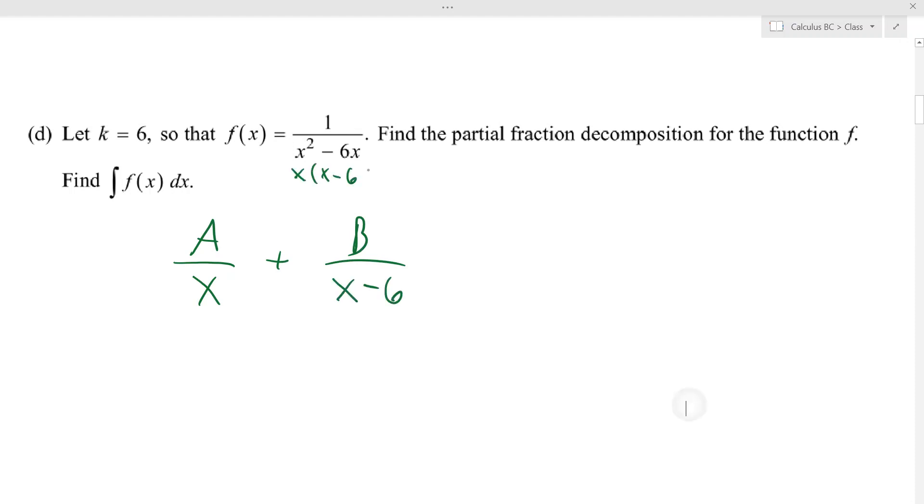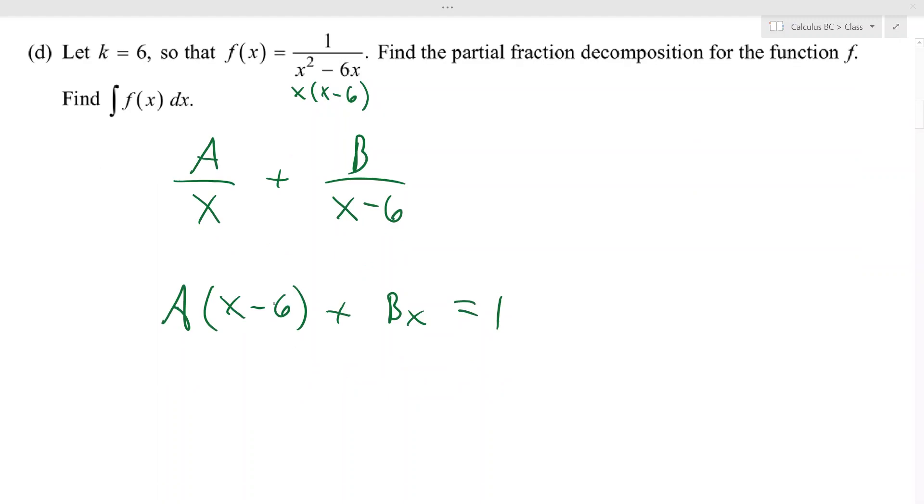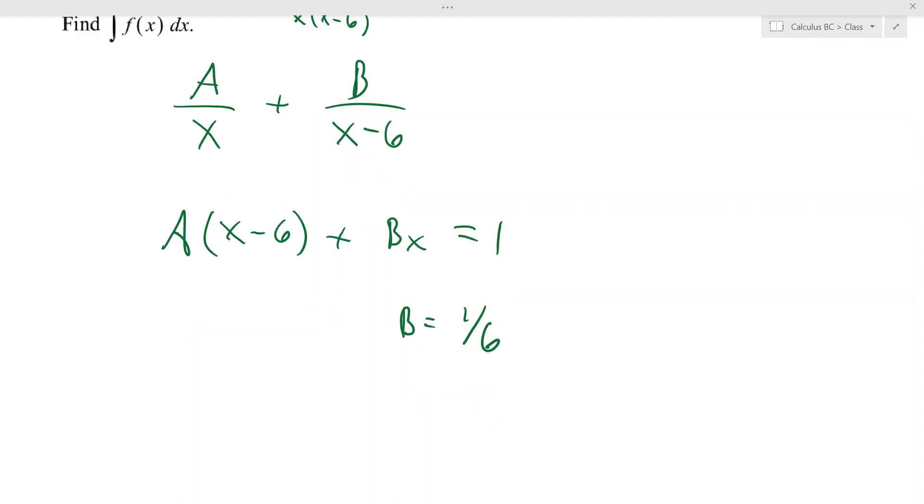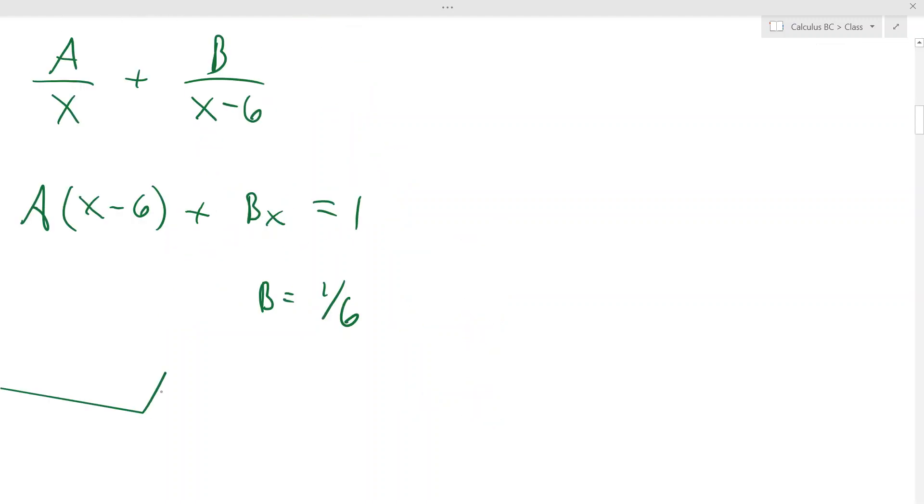So we know that it's going to be something over x plus something over x minus 6, because that's how this factors, right? So you get A times x minus 6 plus B times x has got to be 1. If you plug in 6, you get 6B equals 1, which means B equals a sixth. And if you plug in negative 6 or positive—no, if you plug in zero, you get negative 6A equals 1, so A—what just happened there? A is negative one sixth.